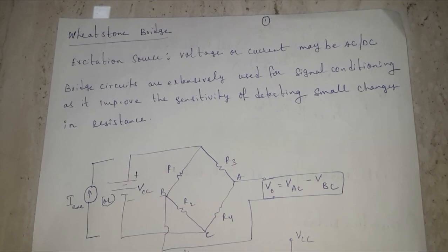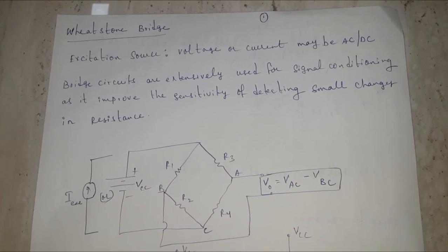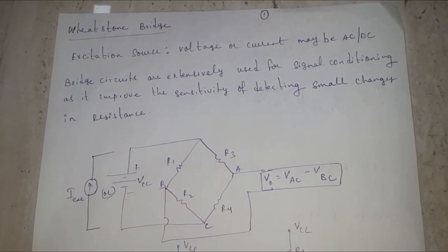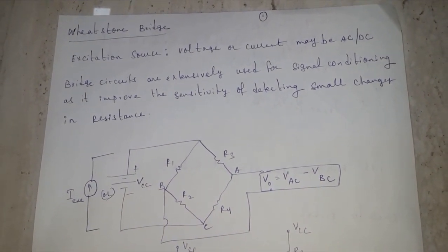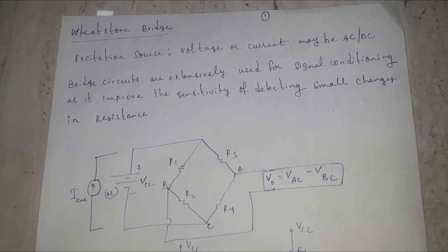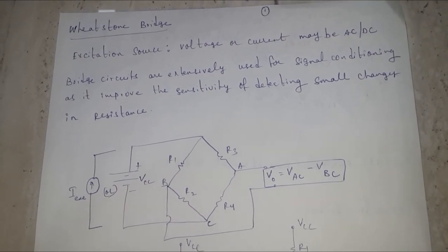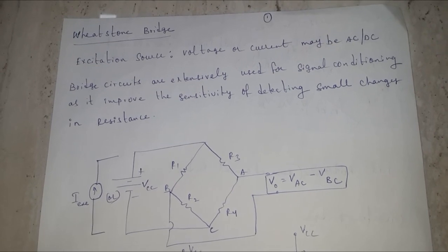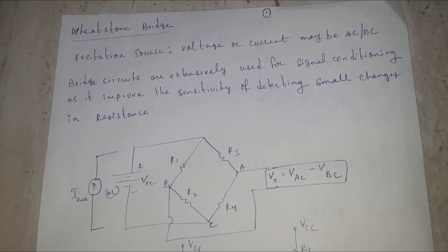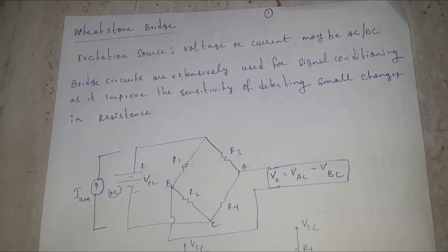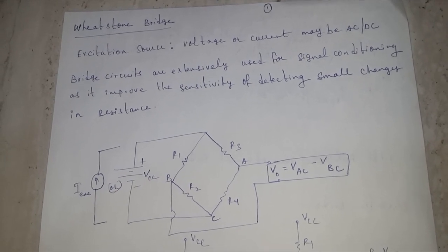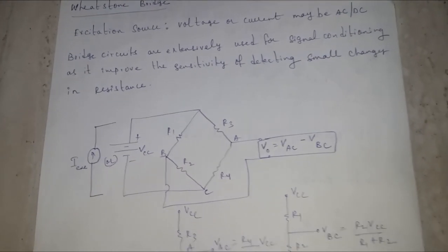In this video I will discuss the Wheatstone bridge, which is extensively used for signal conditioning circuits because it improves the sensitivity of detecting small changes in resistance. Sensitivity is defined as the change in output to the change in input, so for a small change in resistance the Wheatstone bridge will produce a high output voltage.